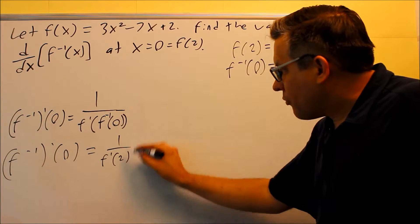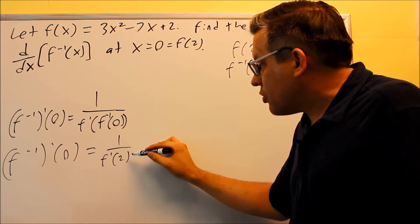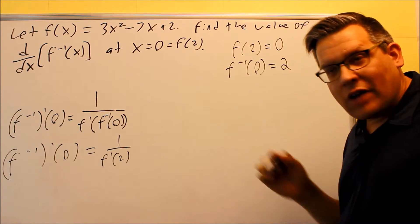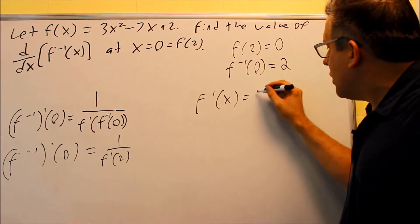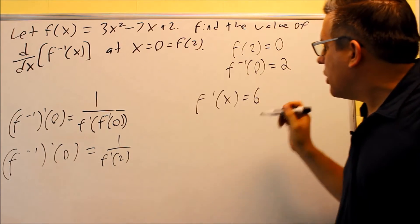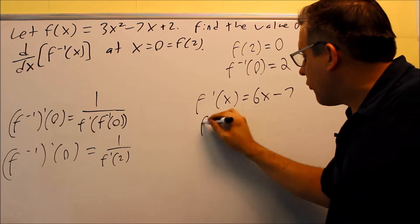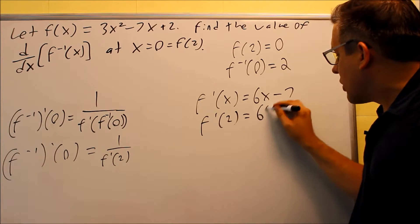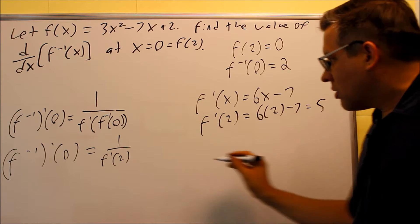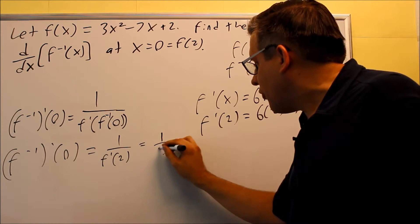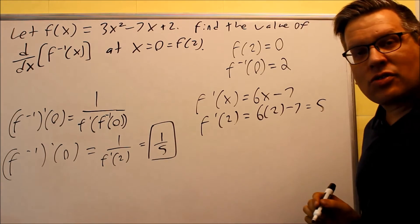So where did the 2 come from? The inverse evaluated at 0 — we found that earlier. All we have to do is find the derivative, put 0 in it, plug that in, and we have our answer. The derivative f'(x) is: 2 comes down multiplied by 3, giving 6x, minus 7, and the derivative of the constant goes away. So f'(2) equals 6 times 2 minus 7, which is 12 minus 7, equals 5. That means I put a 5 in for this, and therefore that is the answer to the entire problem.